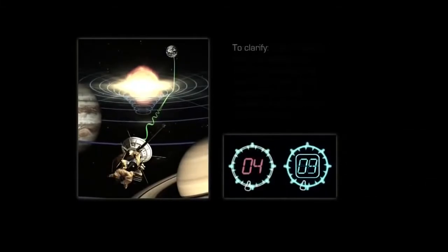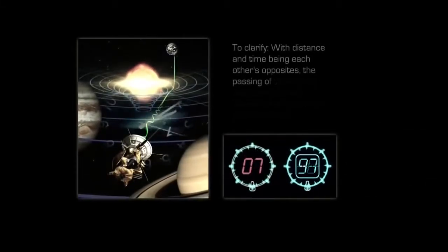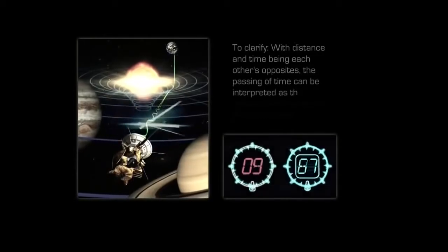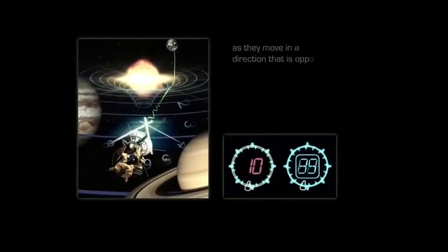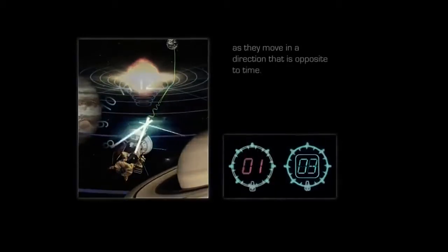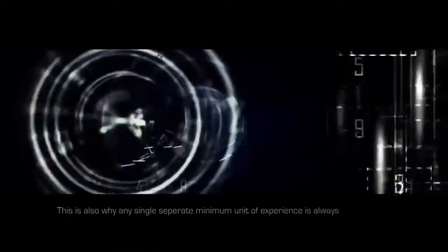In an absolute sense, the notion of time does not differ from the notion of distance. Seconds are equal to light seconds but cancel each other out. To clarify, with distance and time being each other's opposites, the passing of time can be interpreted as the distance that the hands of a clock travel as they move in a direction that is opposite to time. As they move forward in distance, they effectively travel backwards in what we would call time. This is also why any single separate minimum unit of experience is always instantly annihilated within a timeless now.